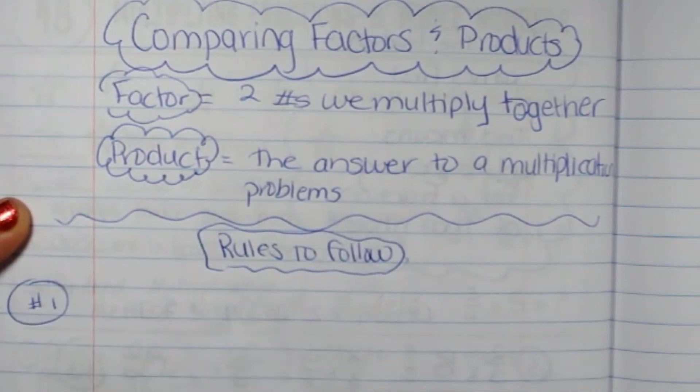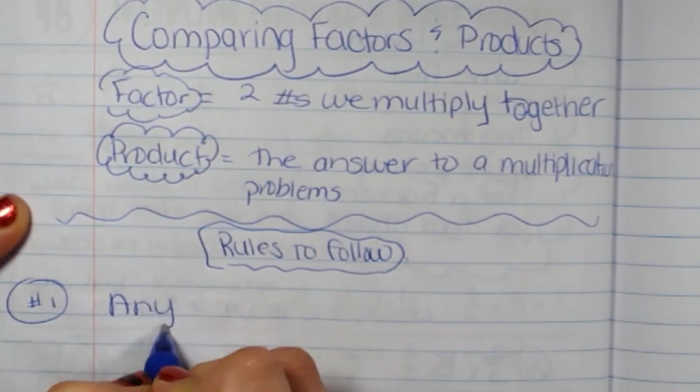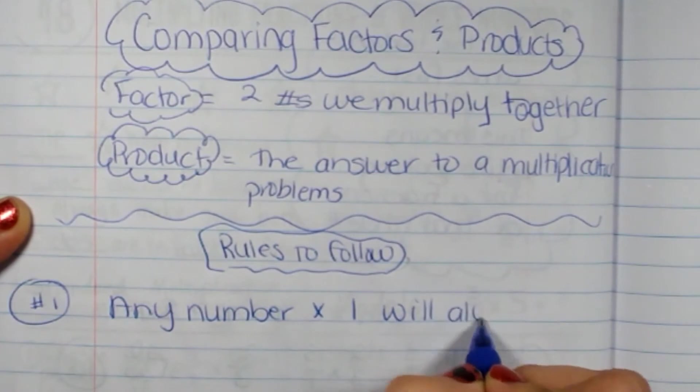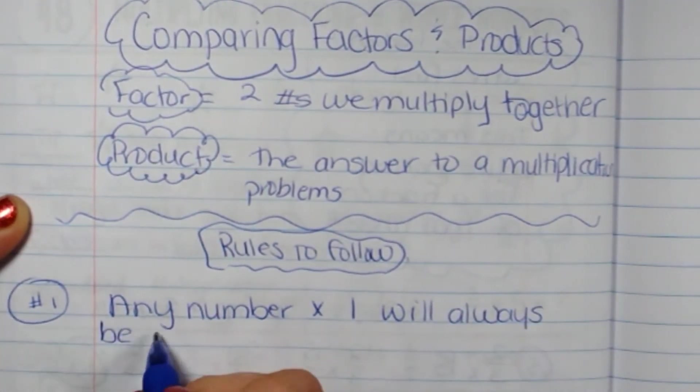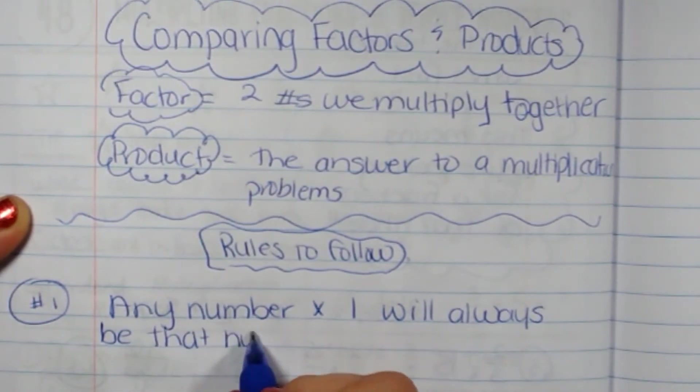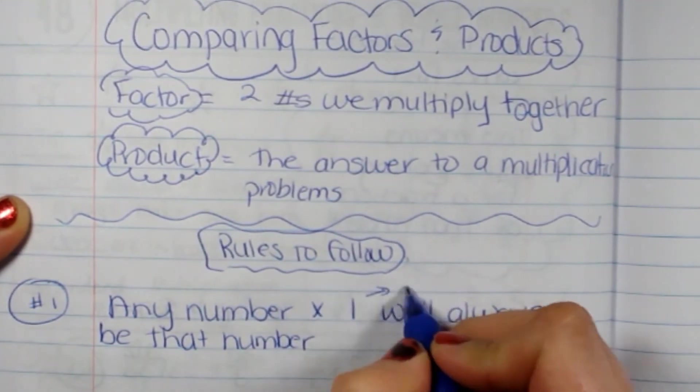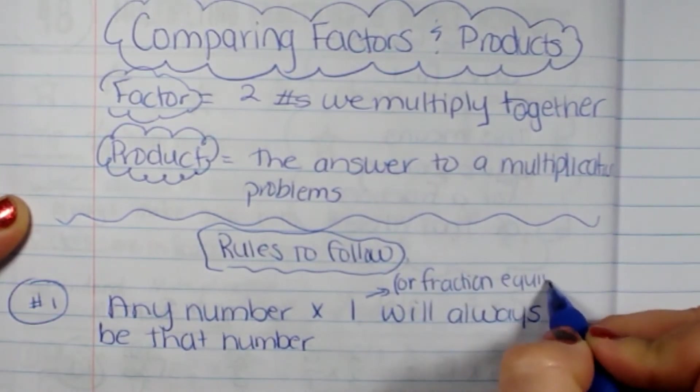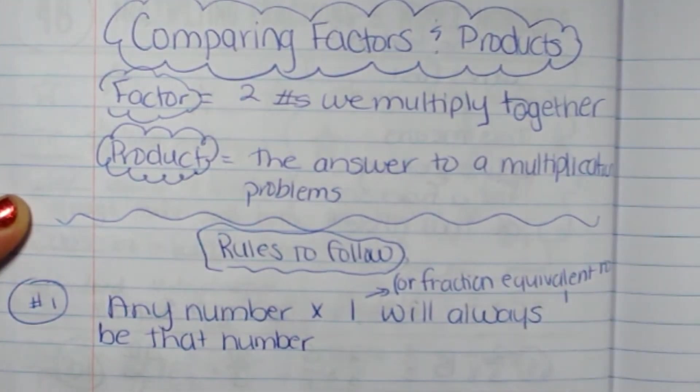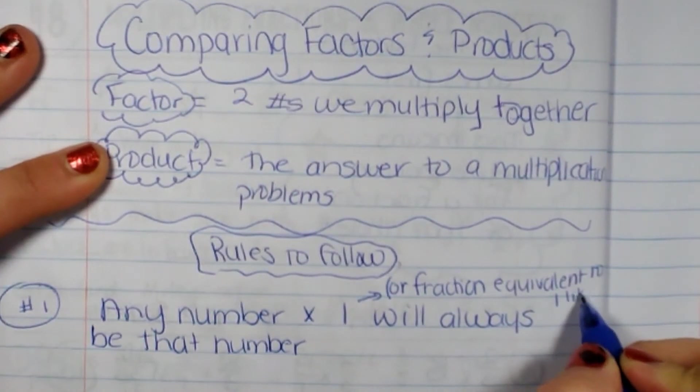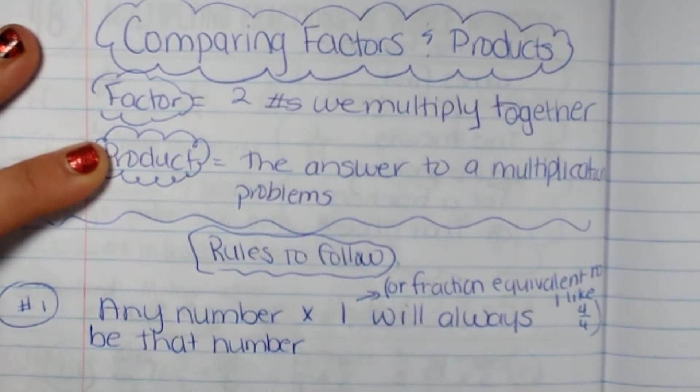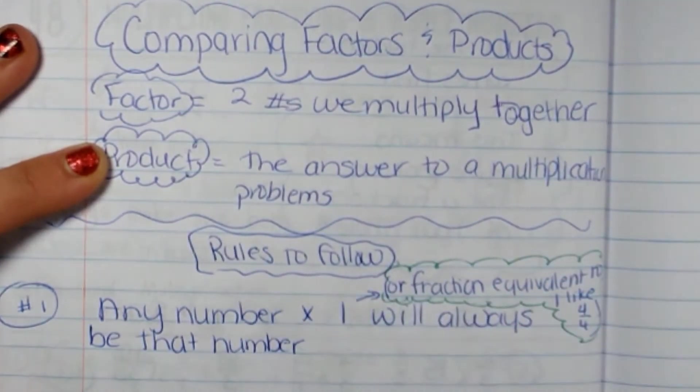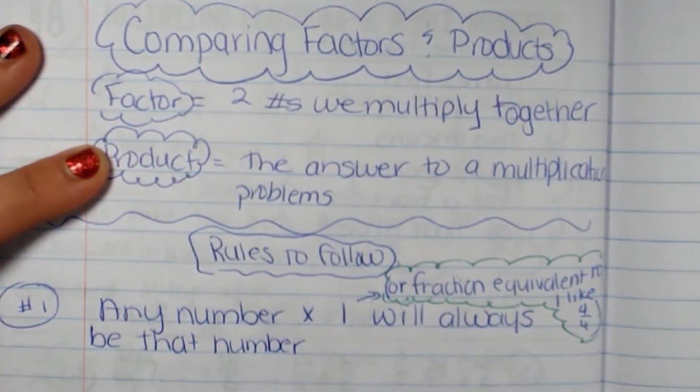So number one, any number times one will always be that number. Also, it could also be a fraction equivalent to one. For example, like four-fourths. So not just one, any fraction that's equivalent to one, like four-fourths, three-thirds, two-seconds, any number over itself equals one. It will always equal that number.